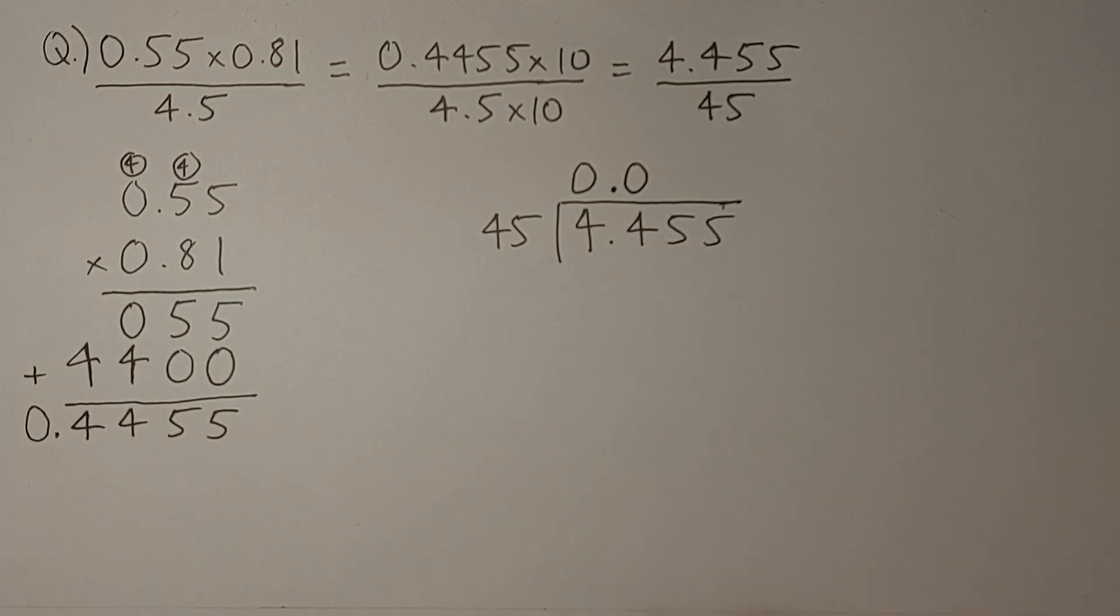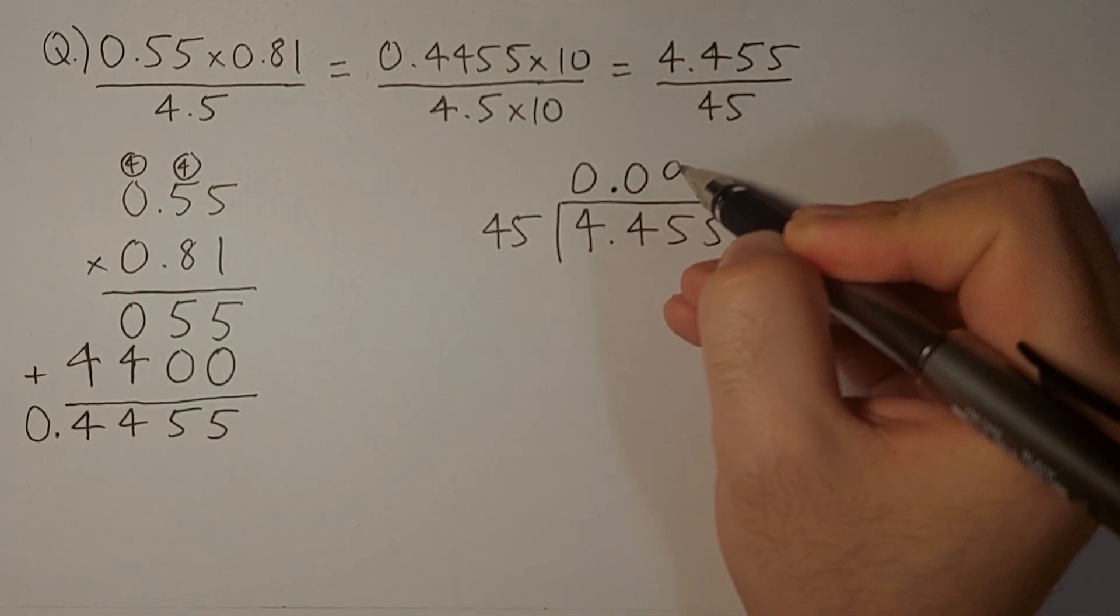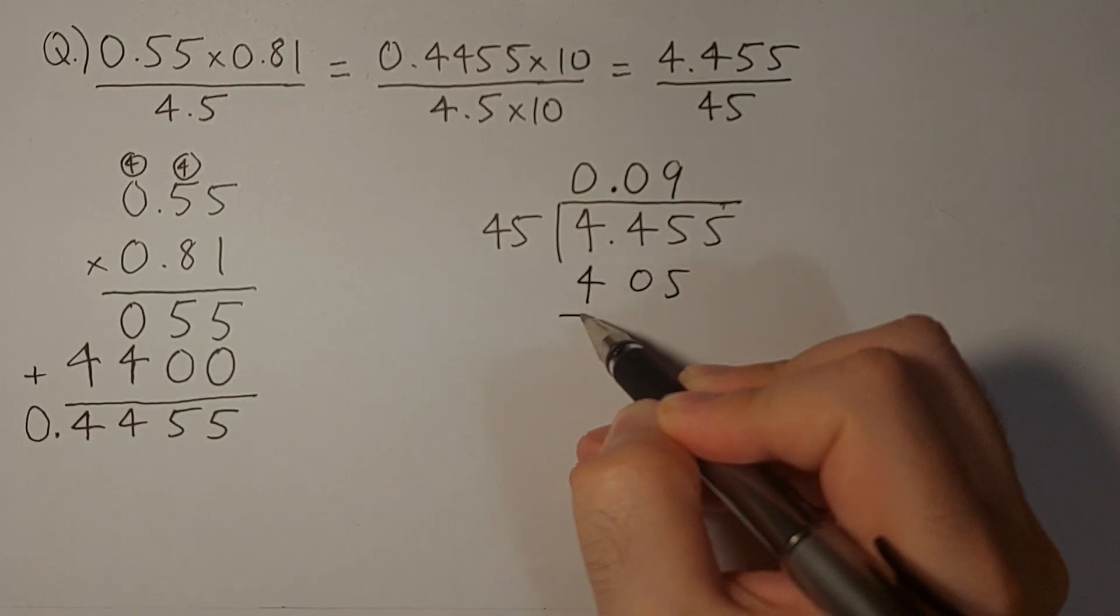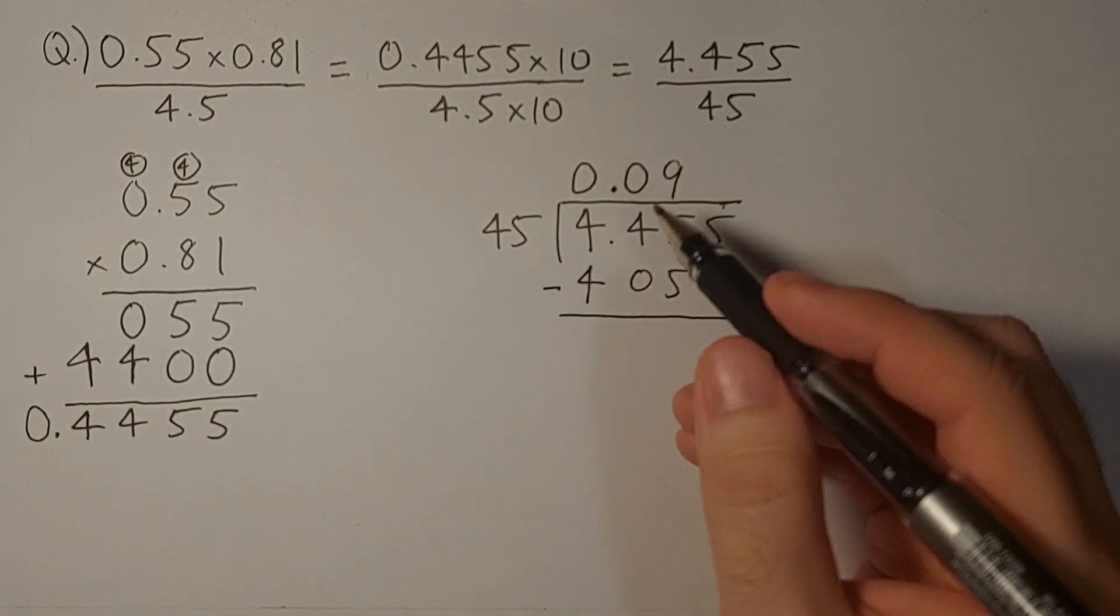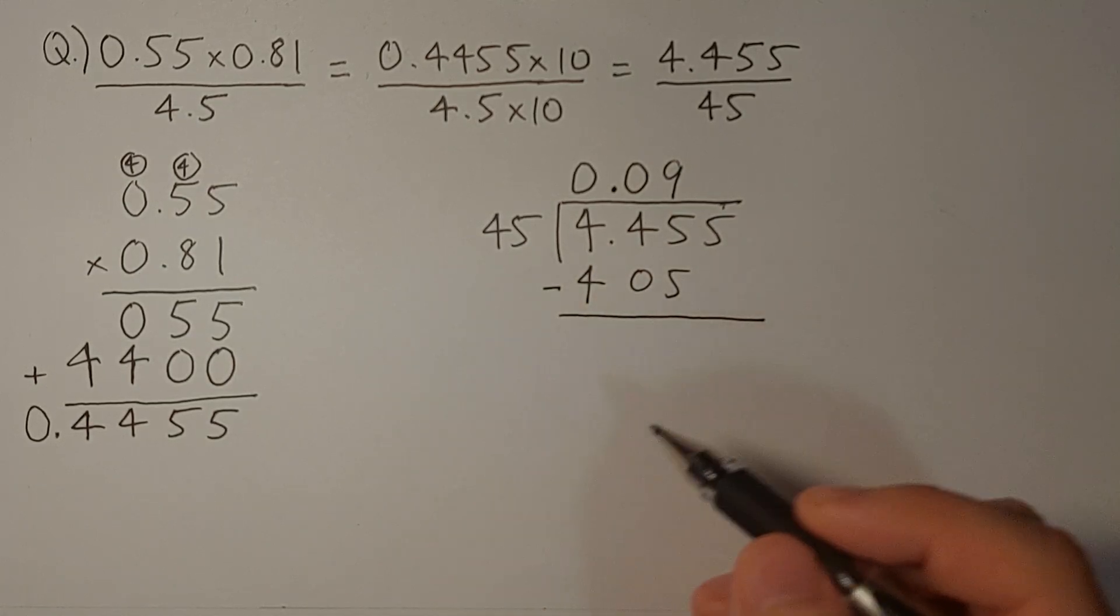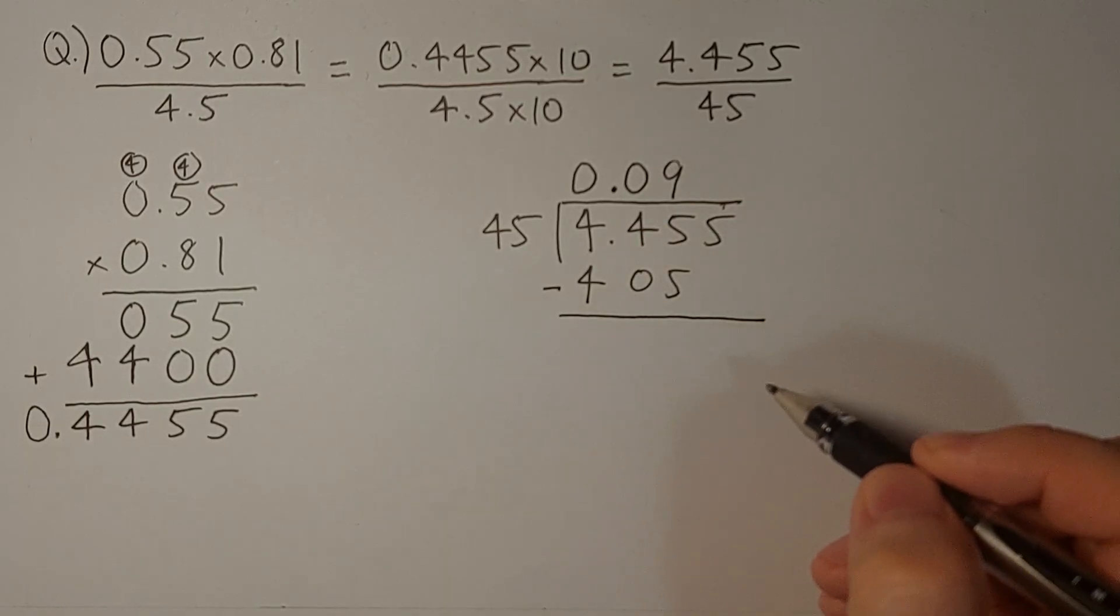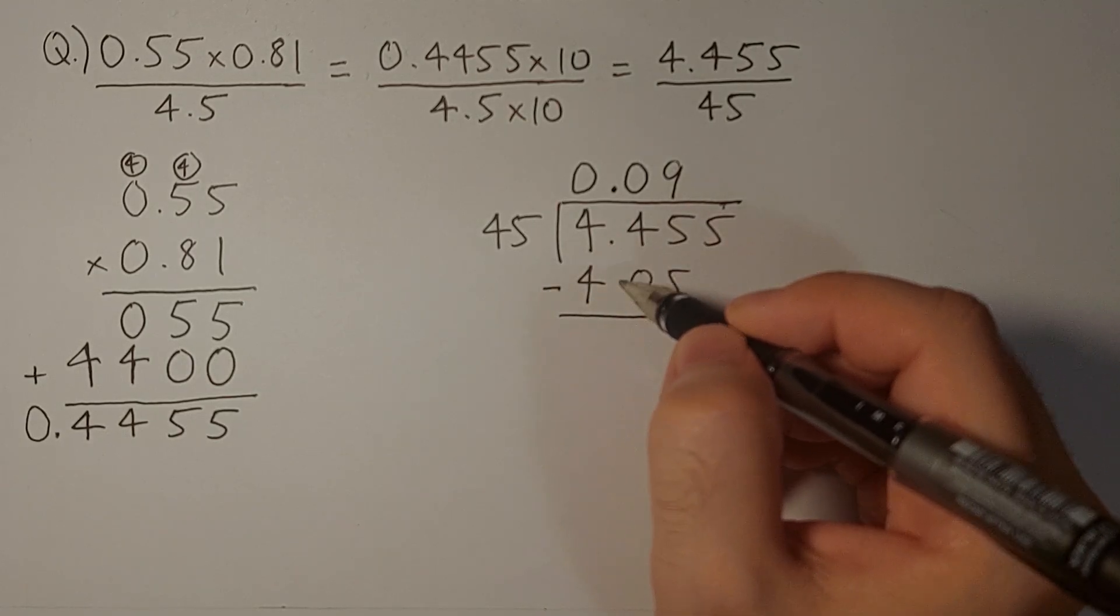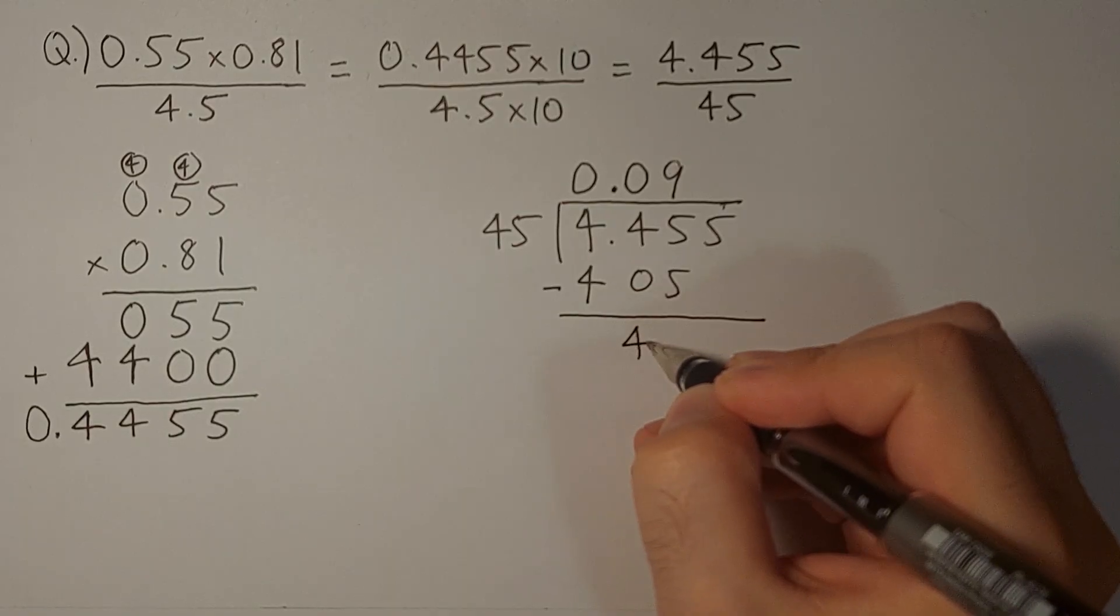The closest we can get to 445 is if we multiply 45 by 9. This will give us 405. If we multiply 45 by 10, that would give us 450, which would be greater than 445, and we don't want that. The closest we can get is 405. So we subtract 405 from 445. We get 40.